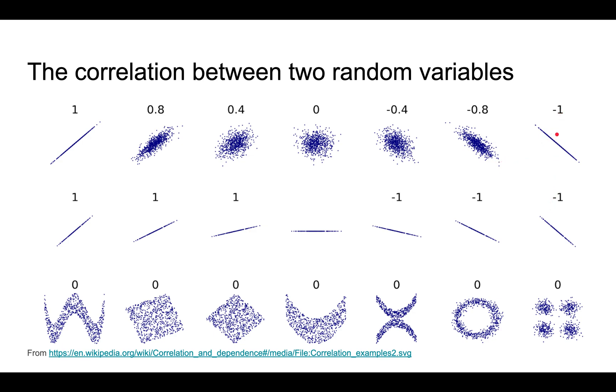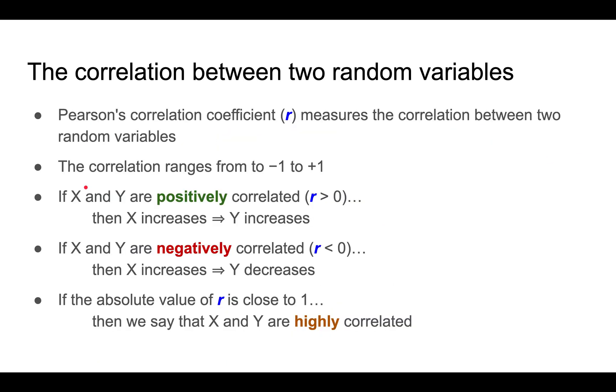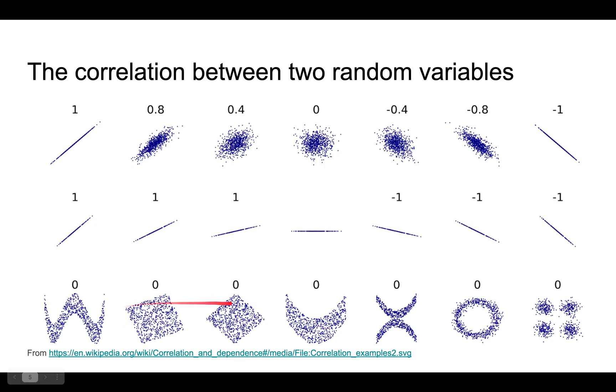These two examples have correlation minus 1. These two examples have correlation plus 1. They are both highly correlated. And here's a bunch of plots with zero correlation.